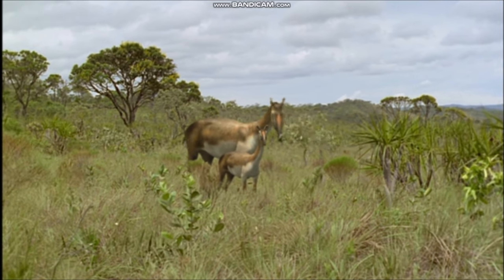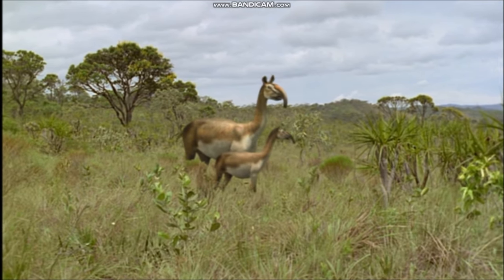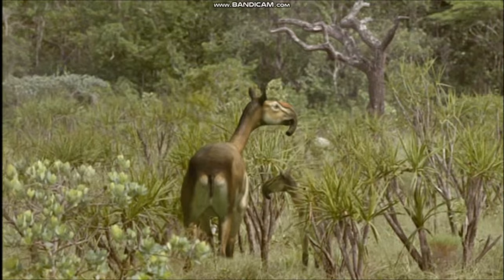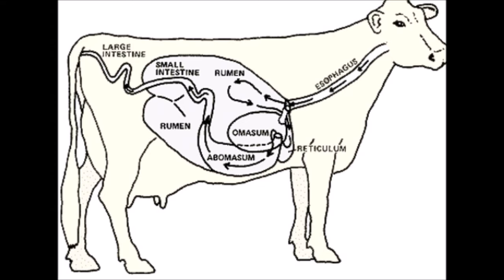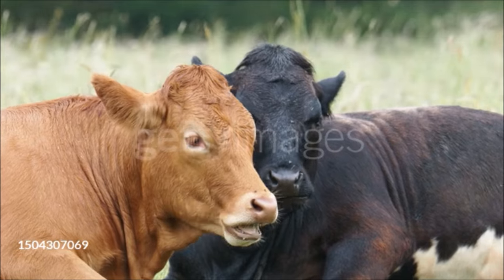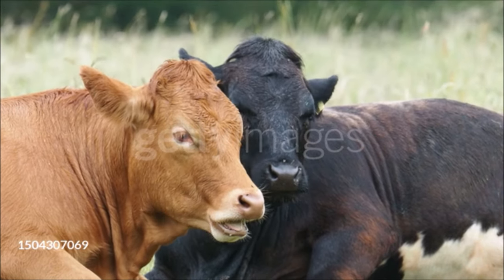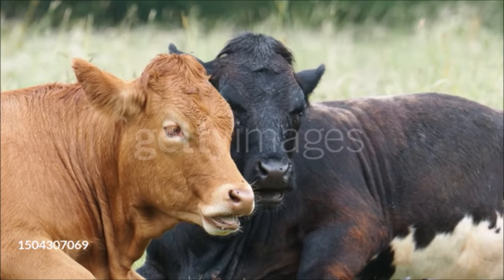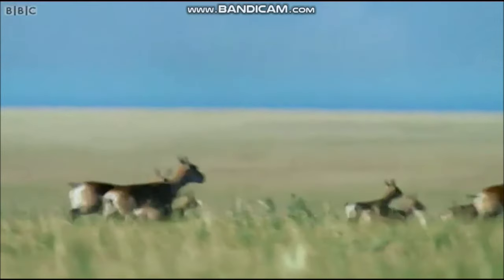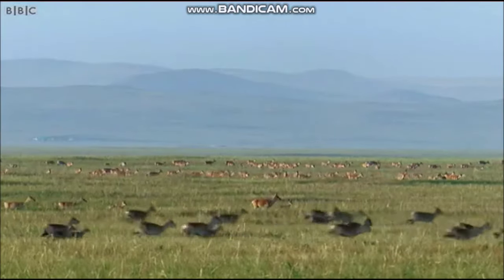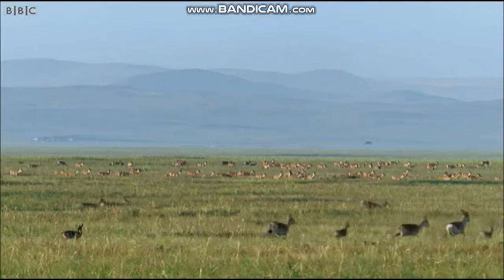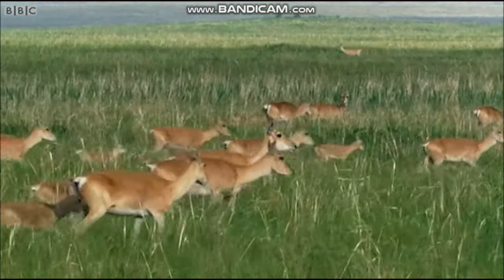The expansion of grasslands gave rise to a new mode of feeding among herbivores: grazing. Even-toed ungulates, hoofed mammals — especially ruminants — were better suited to eating the coarse, low-nutritional-value grasses than odd-toed ungulates, due to their more highly developed stomachs. Ruminants have four-chambered stomachs with microbes that digest cellulose, and they regurgitate and chew tough plant material before swallowing it again. These adaptations led to a dramatic diversification of artiodactyls such as cattle, sheep, and antelopes during the Miocene, at the expense of perissodactyls such as horses, rhinoceroses, and tapirs.